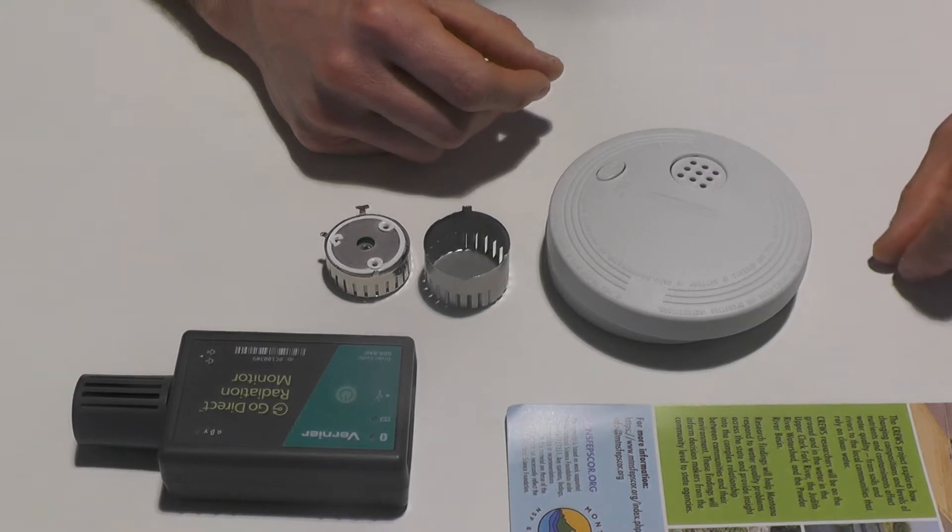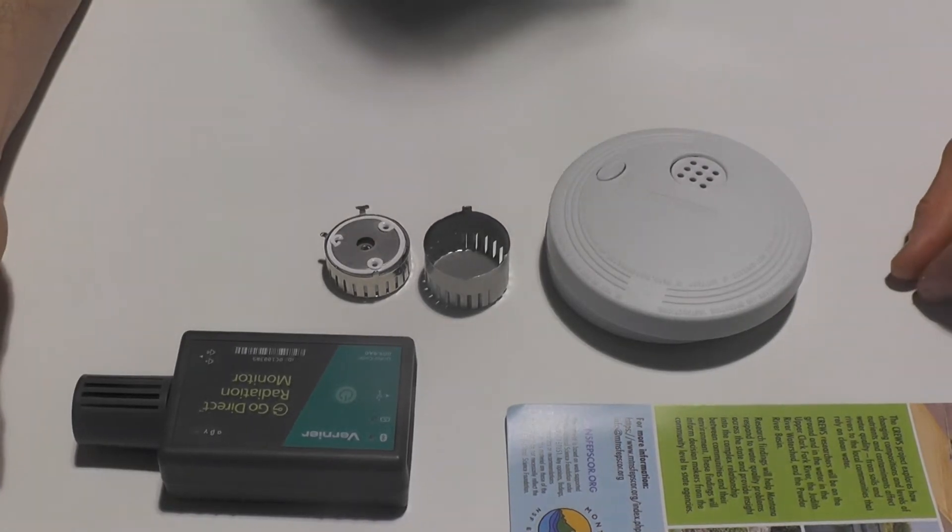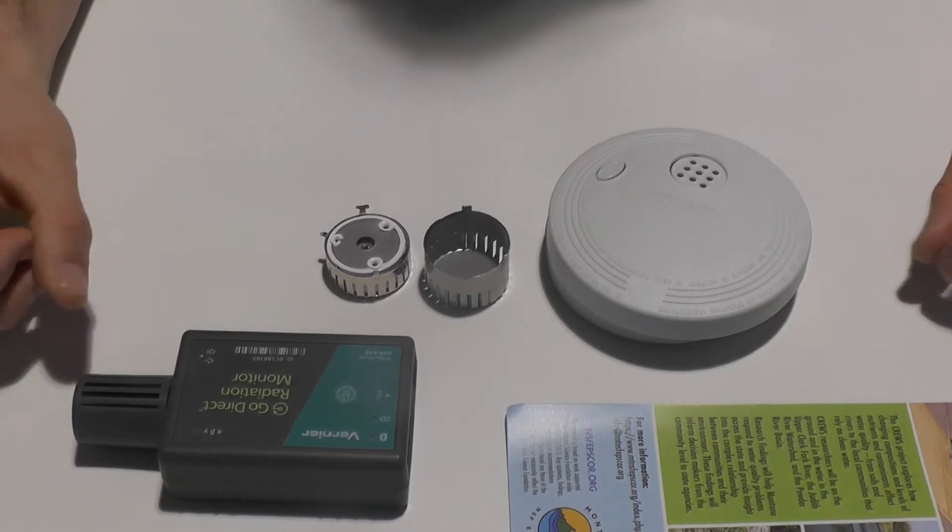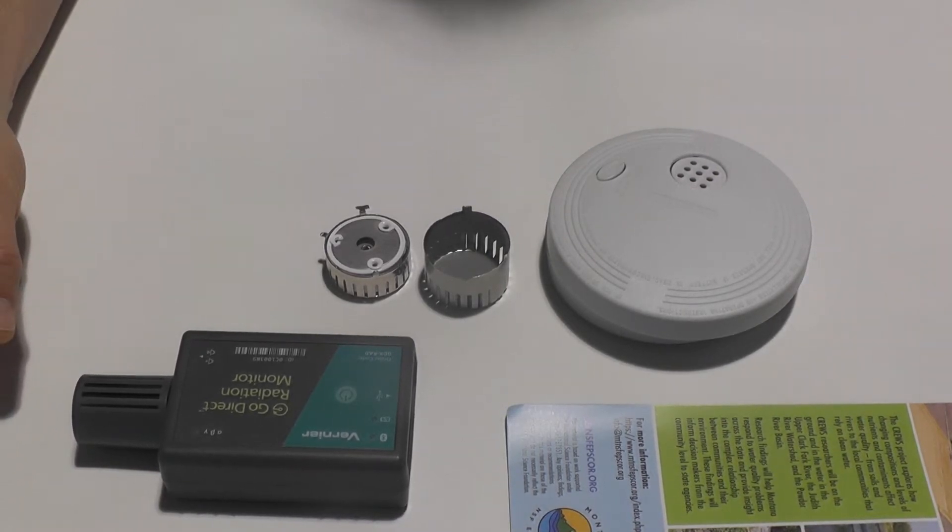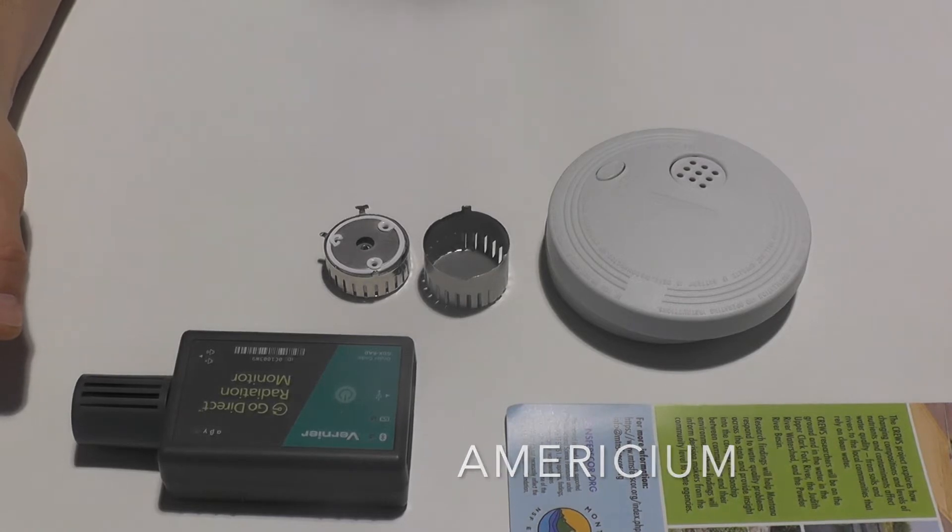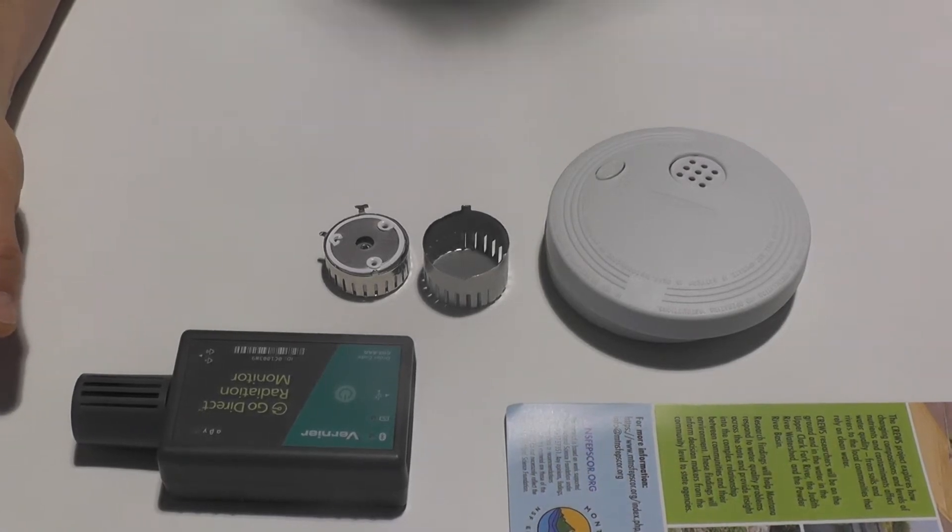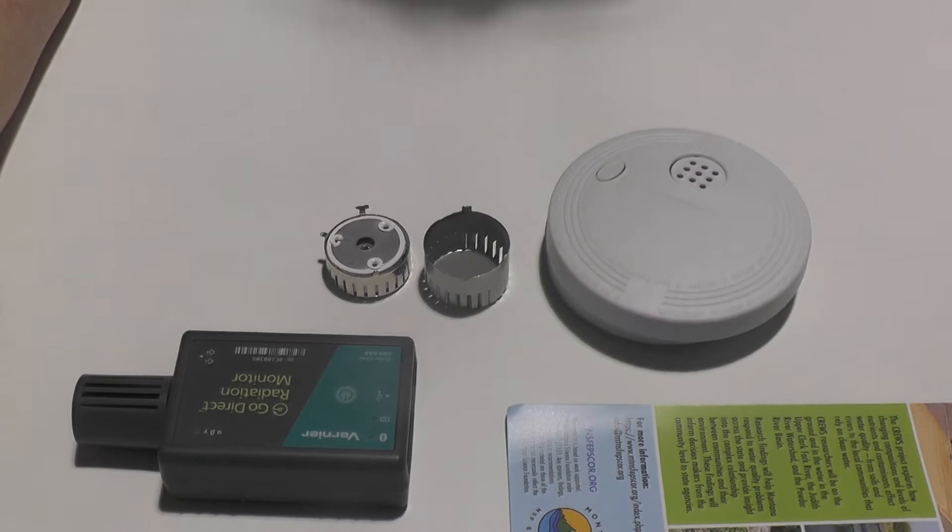How they work is actually really interesting. They have a little piece inside of them of a material called americium, and americium is actually radioactive and it uses the properties of this radioactivity to help sense smoke.